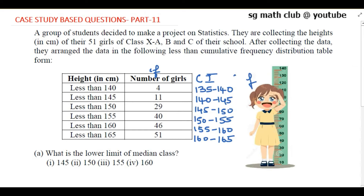Now we will write the frequency from the cumulative frequency. For 135–140, the number of girls is 4. For 140–145, it is 11 minus 4 = 7. Similarly, 29 minus 11 = 18, then 40 minus 29 = 11, then 46 minus 40 = 6, and finally 51 minus 46 = 5. So we now have the frequency for each class.